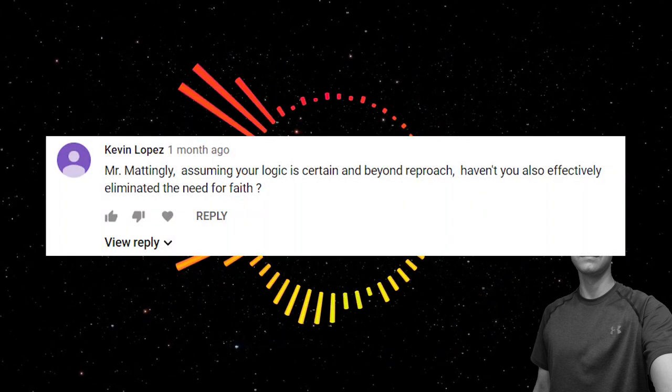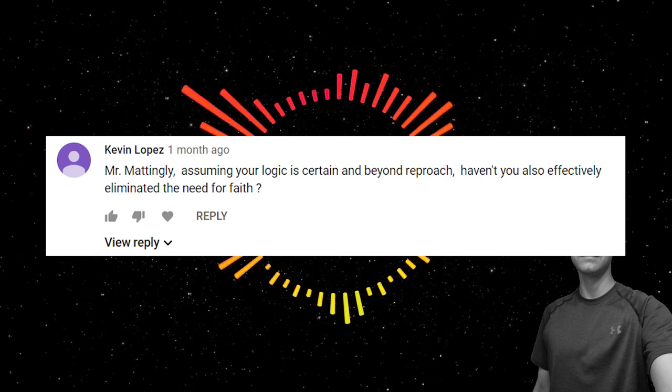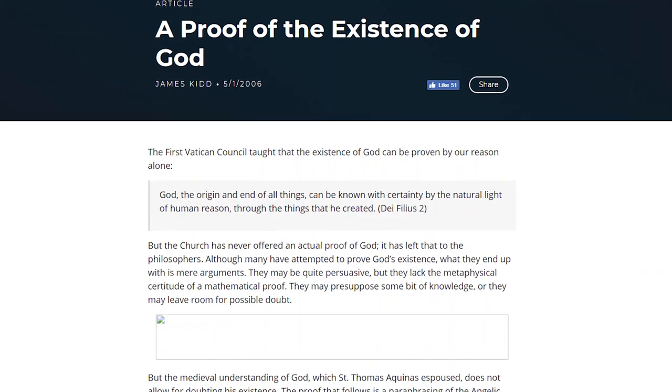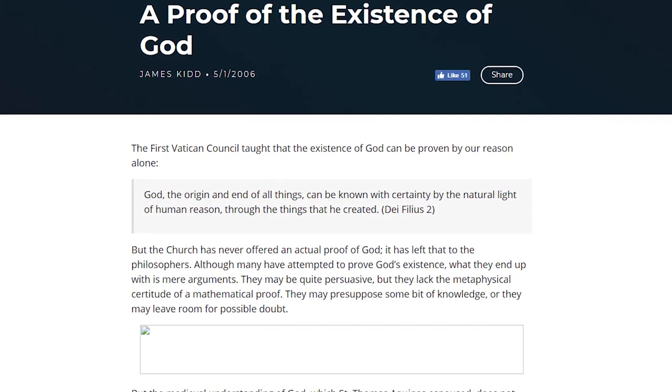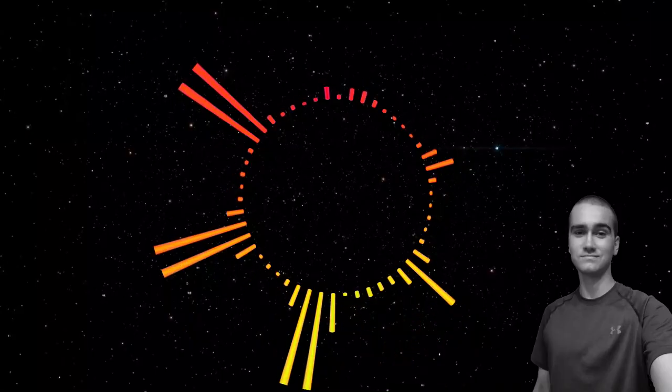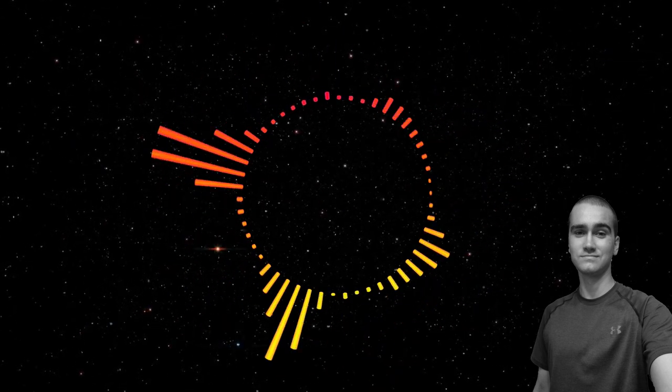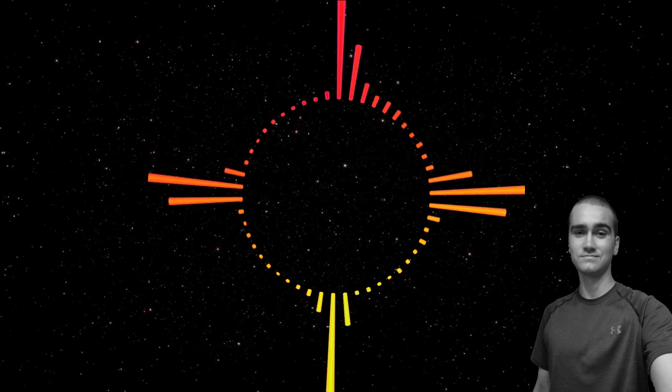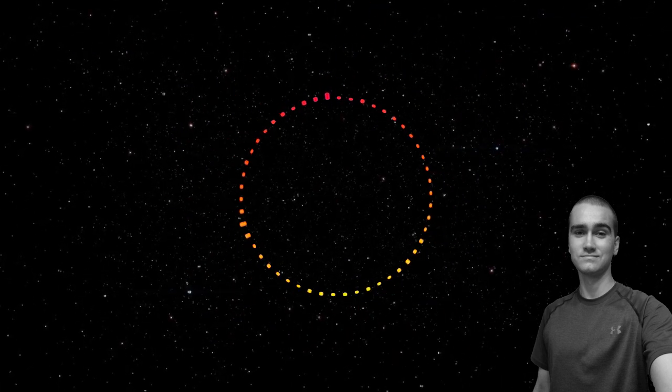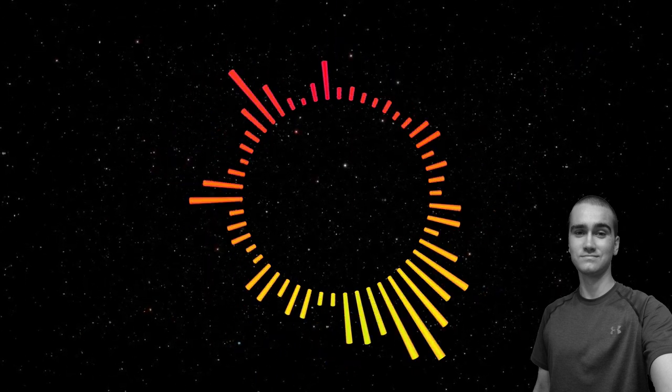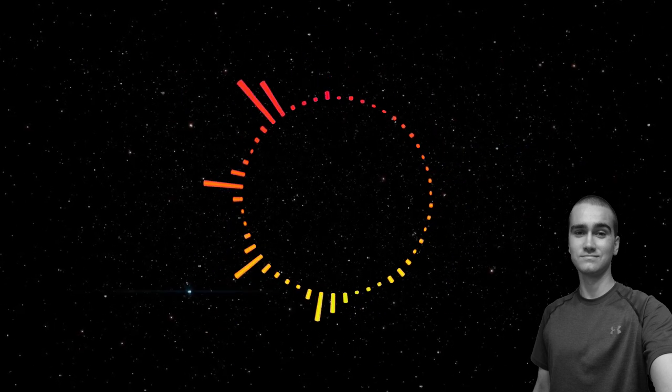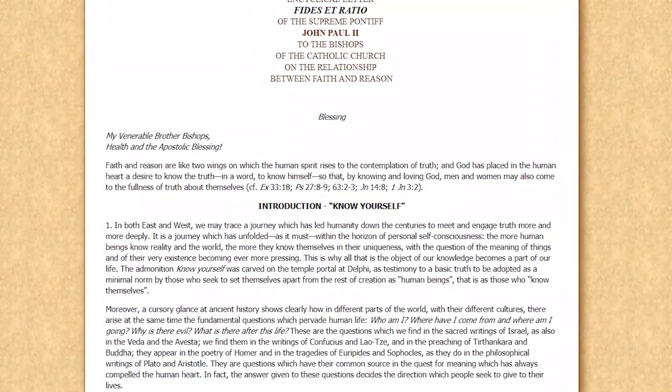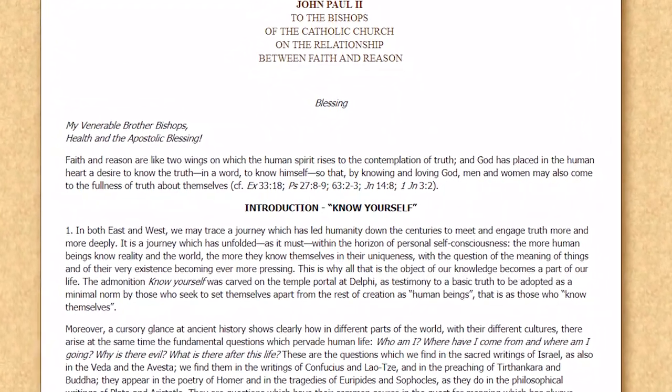Finally, Kevin Lopez said, Mr. Mattingly, assuming your logic is certain in Beyond Reproach, haven't you also effectively eliminated the need for faith? To this, I say a couple of things. First off, the First Vatican Council said, God, the origin and end of all things can be known with certainty by the natural light of human reason, through the things he created. Therefore, you don't need to have faith to get to God. You just need to use reason. Now, faith builds on reason, which is why you will often hear people say that you need to have a solid philosophical system before you can do theology. And that, if you have bad philosophy, then you will also have bad theology. This is precisely why seminarians for the Catholic Church are required to study philosophy before theology. And one of my favorite quotes that is related to faith and reason is at the beginning of St. John Paul II's Fides et Ratio, which is faith and reason, when he says, Faith and reason are like two wings on which the human spirit arises to the contemplation of truth.